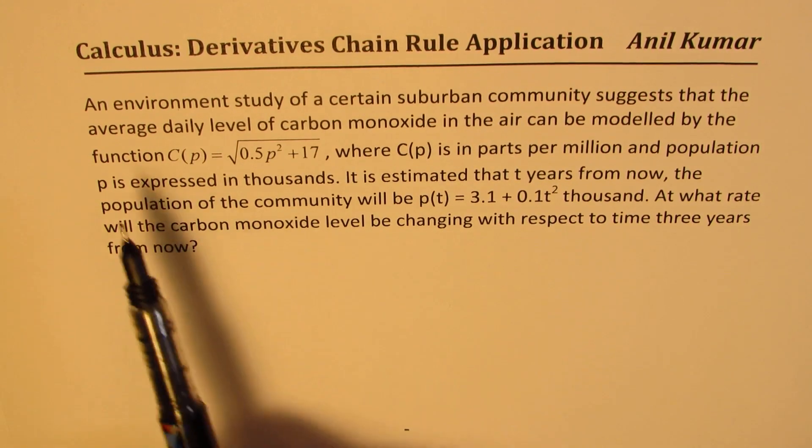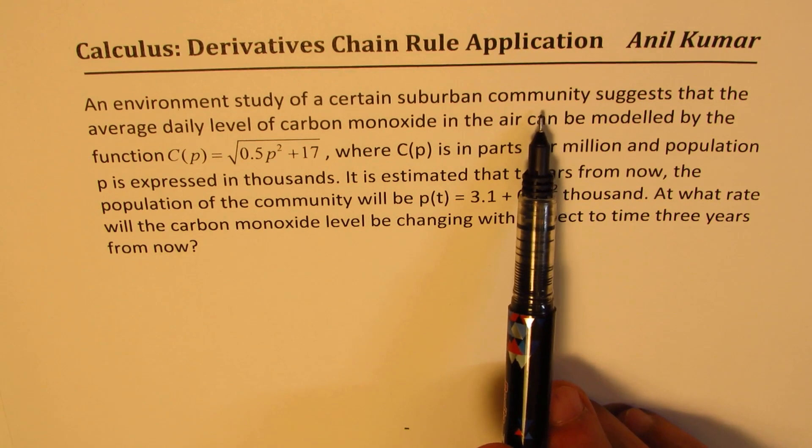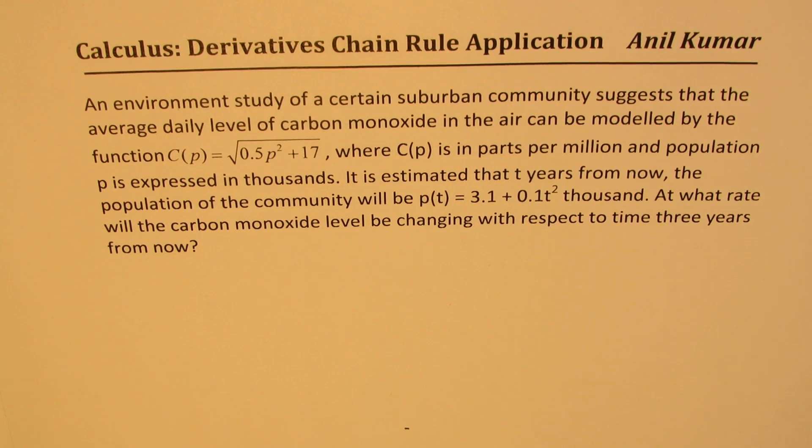The question here is, an environment study of a certain suburban community suggests that the average daily level of carbon monoxide in the air can be modeled by the function C(p) = √(0.5p² + 17), where C(p) is in parts per million and population p is expressed in thousands.